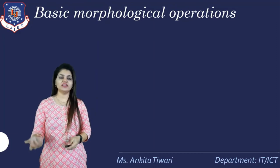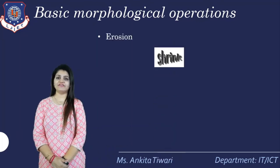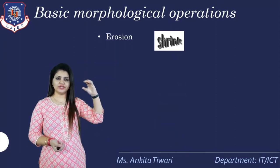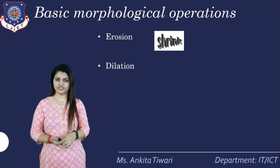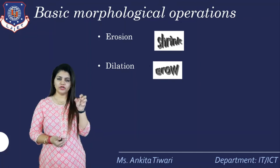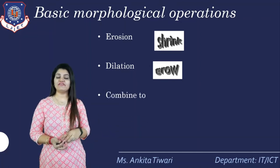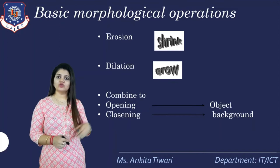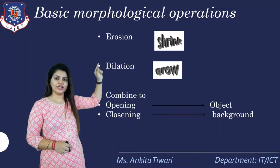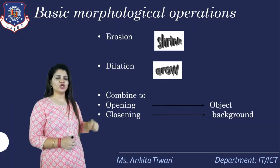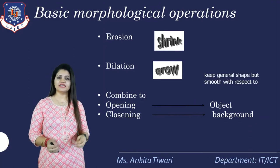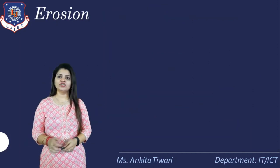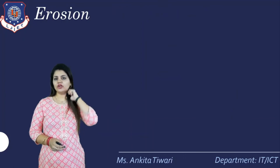We have four morphological operations. First is erosion — it shrinks the image. Then dilation — it grows the image from small to large. The combination of erosion and dilation gives us opening and closing, applied to the object and background respectively. These keep the general shape but smooth it.